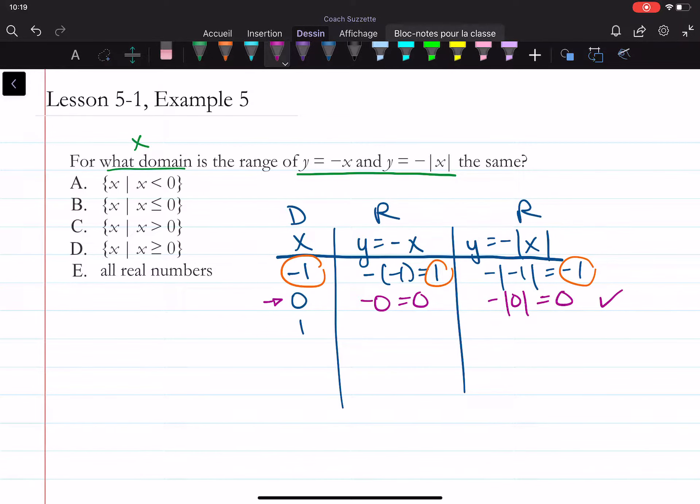What about positive one? I'd have a negative one here, and I'd have a negative one here.